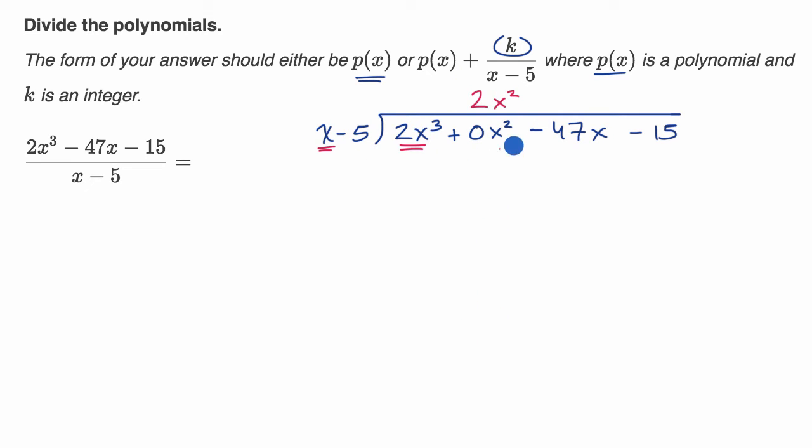You can see how it would've gotten messy if I put negative 47x here. I'd be like, where do I put that 2x squared? And you might confuse yourself, which none of us would want to happen. All right, 2x squared times negative five is negative 10x squared. 2x squared times x is 2x to the third power.